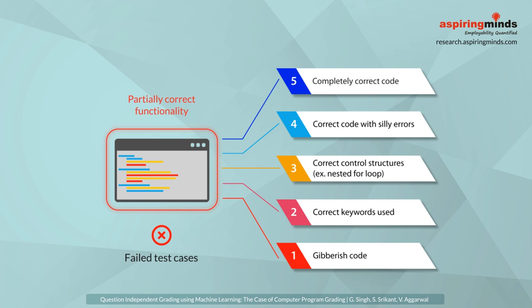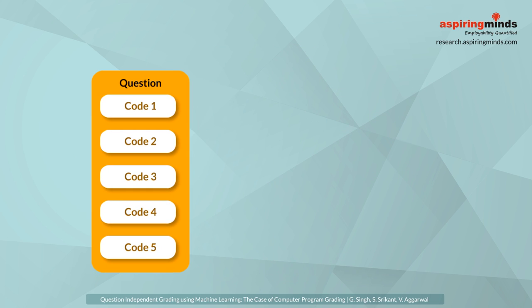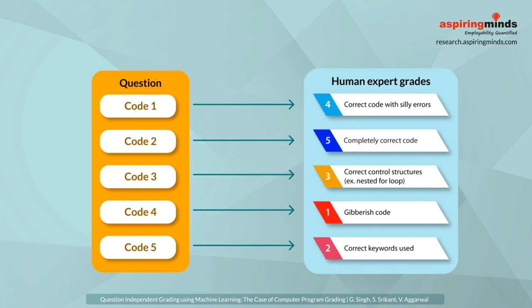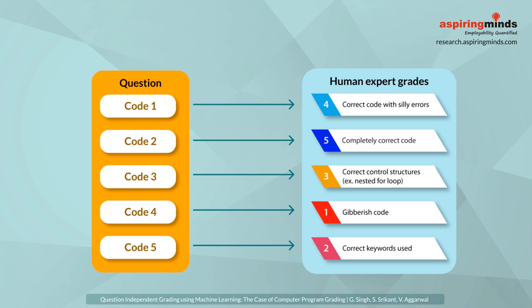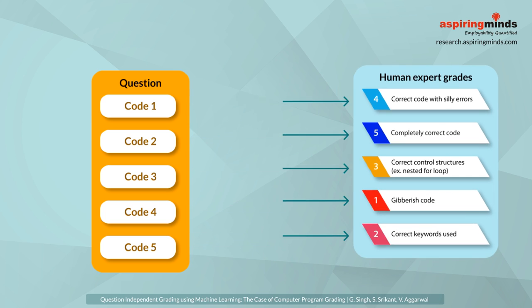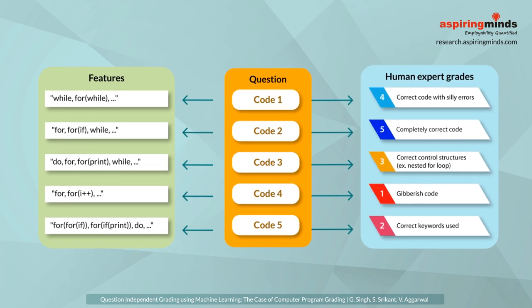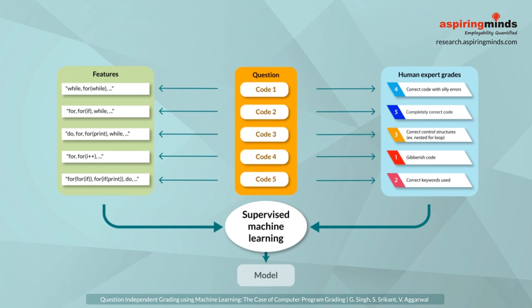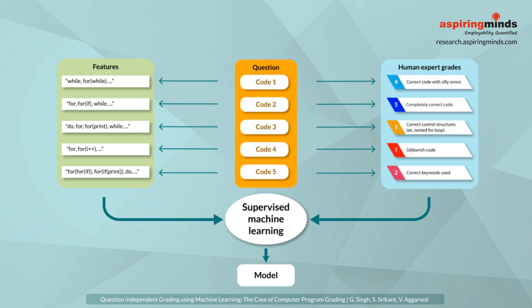We use supervised learning to solve this problem. We get codes for a given question graded by human experts and build supervised grading models. In our 2014 KDD paper, we proposed grammar to derive rich semantic features from codes which could predict grades as good as humans do. It was a success!